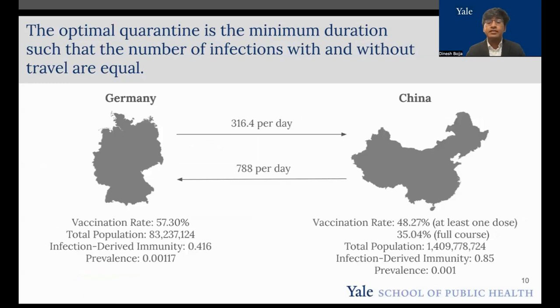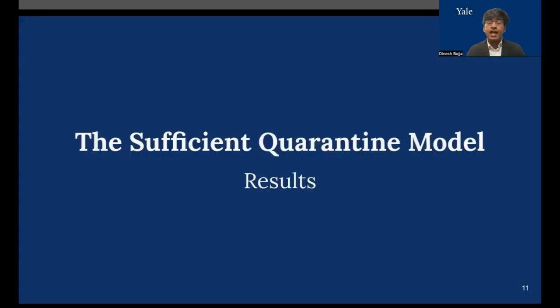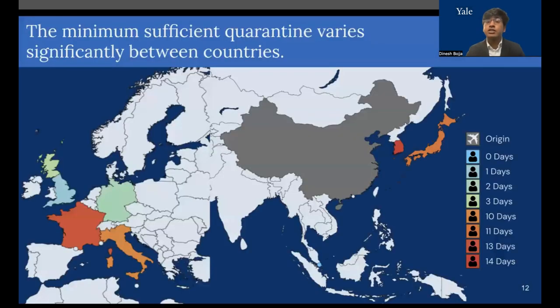To make this model, we need to collect some data, such as the vaccination rate, population, infection-derived immunity, prevalence, and travel statistics. After getting this information, we're able to get the results of this sufficient quarantine model.